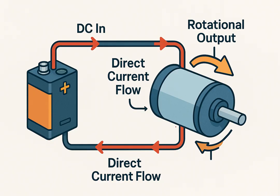In a DC motor, this force is what causes the rotor, or armature, to spin, generating mechanical movement.